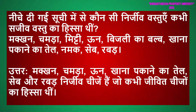नीचे दी गई सूची में से कौन सी निर्जीव वस्तुएं हैं जो कभी सजीव वस्तु का हिस्सा थीं? मक्खन, चमड़ा, मिट्टी, ऊन, बिजली का बल्ब, खाना पकाने का तेल, नमक, सेब, रबड़। उत्तर: मक्खन, चमड़ा, ऊन, खाना पकाने का तेल, सेब और रबड़ निर्जीव चीज़ें हैं जो कभी जीवित चीज़ों का हिस्सा थीं।